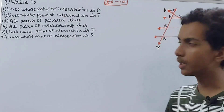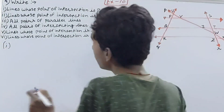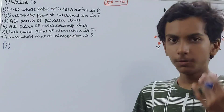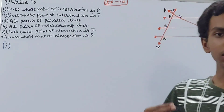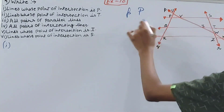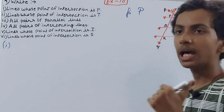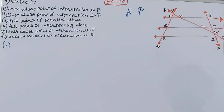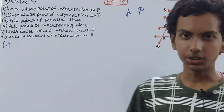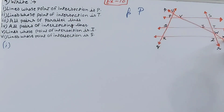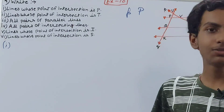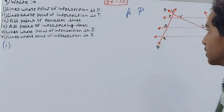First, an important naming convention: lines are always named with small letters — you can see l, m, n, p, r, q — while points are named with capital letters such as S, T, W, Z, X, R, Q, P, U, V. So lines use small letters and points use capital letters.